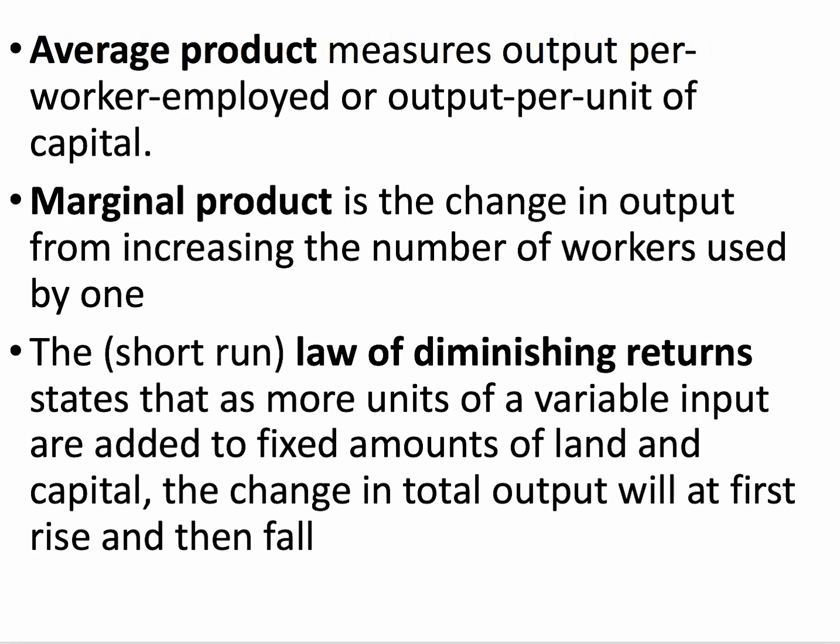The Law of Diminishing Returns says that as more units of a variable input, e.g. labour, are added to a fixed amount of land and capital, the change in output will at first rise — increasing returns — but then fall, giving diminishing returns to labour.